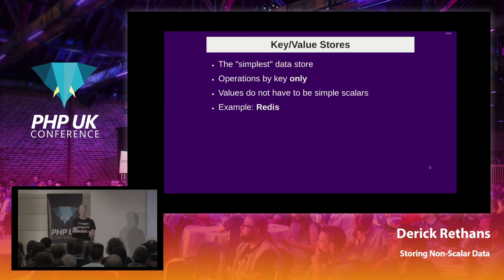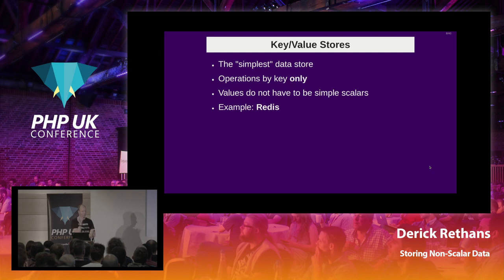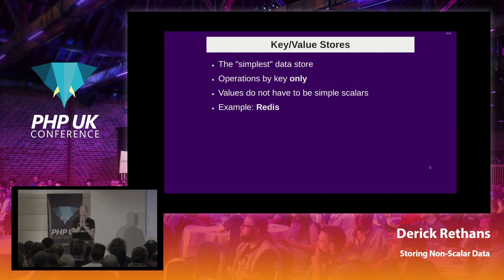The simple one is key-value stores. Key-value stores are usually really small, really fast, and all operations you can do are on the key only. But they do allow the values stored with these keys to be more than simple numbers, strings, or booleans — they allow you to store richer data as a single value for a specific key. An example we'll look at is Redis. Memcache is another variant of this group.